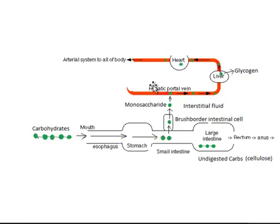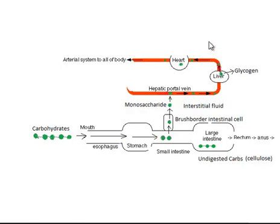Now, what happens when the glucose is absorbed? After the absorption, the blood glucose increases, and that increased blood glucose will trigger production of insulin by the pancreas. Insulin will then tell the cells to take up those excess glucose from the blood so that the blood glucose level normalizes.